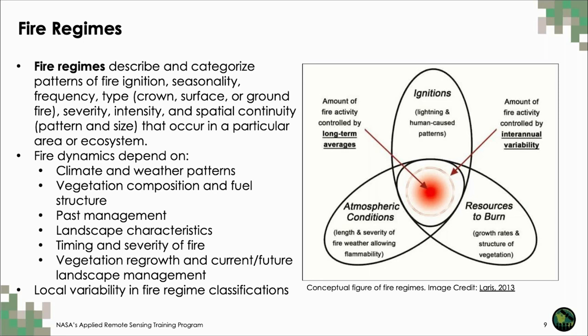Fire dynamics in any given area depend on a variety of factors, including climate and weather patterns, vegetation composition and fuel structure, past management, landscape characteristics, timing and severity of fire, vegetation regrowth, and current and future landscape management.